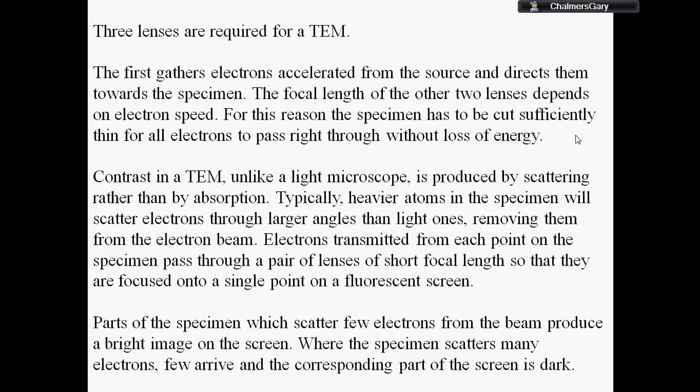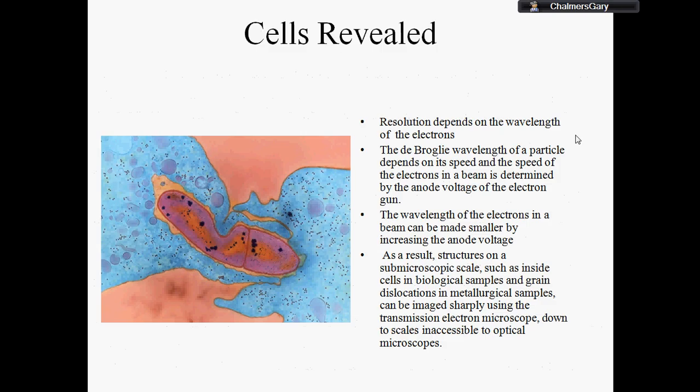So where you have a lot of scattering you'll have a dark bit on the image and where you have less scattering you'll have a lighter part on the image. So that's fairly simple. And it's first used really to look at cells in much more detail than we have done before.